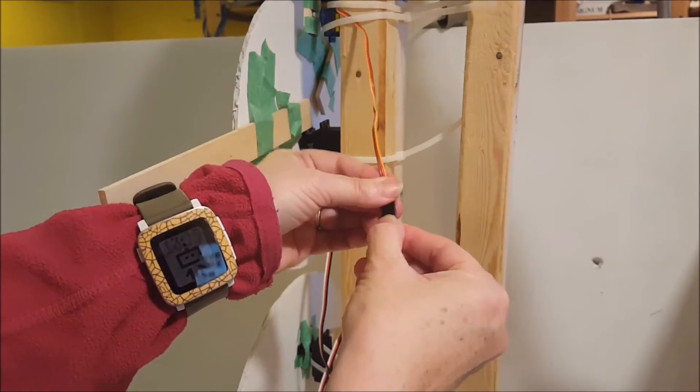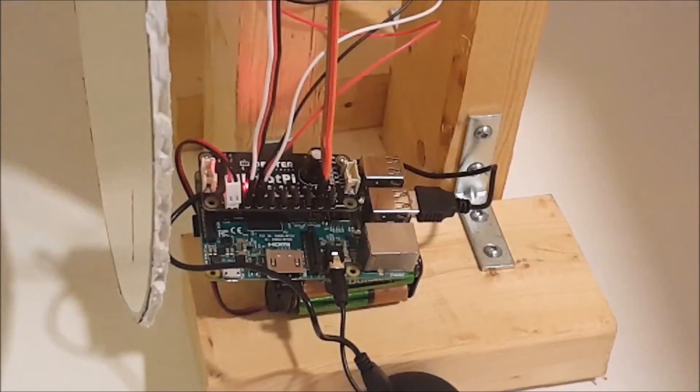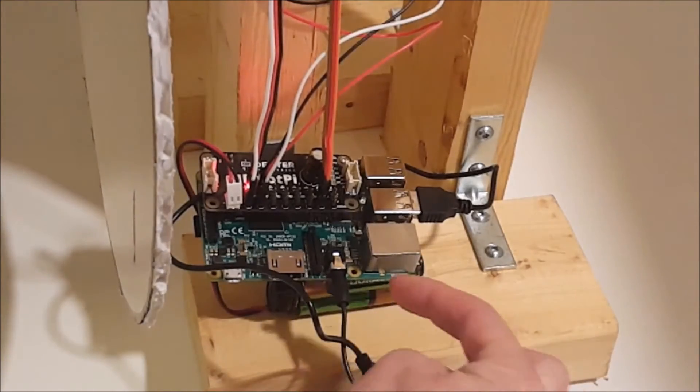Make the servo wires longer by using male to female jumper wires. Then attach all servos to the Raspberry Pi.